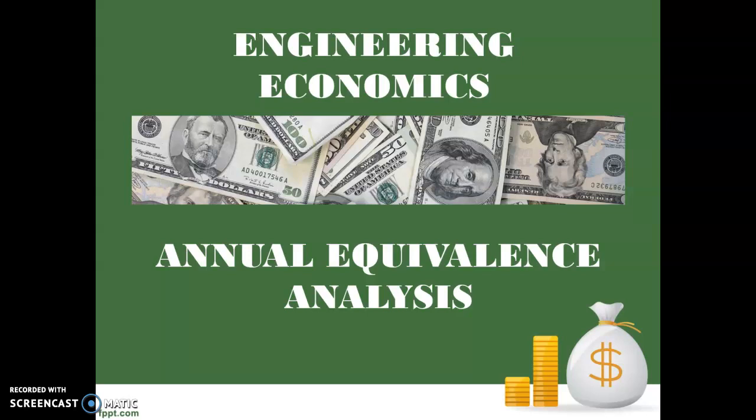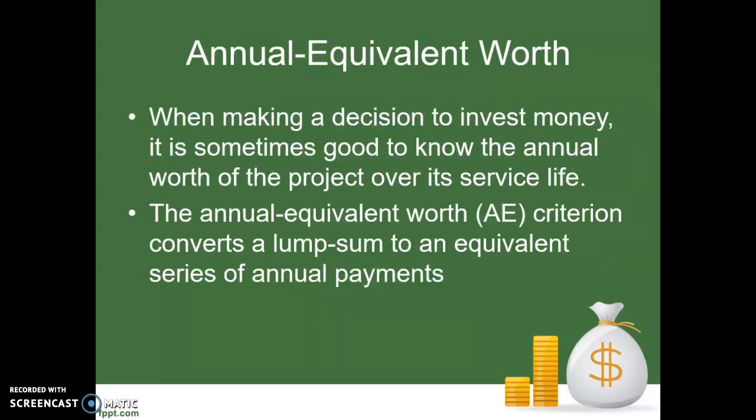Welcome to an engineering economics video. We are looking at chapter six in the textbook, and the topic we're going to cover in this chapter is annual equivalence analysis. We have already looked at a few ways of screening projects. If you're an engineer and head of an engineering department at a company and you need to decide what projects your department is going to do to make the company more profitable, and you have several different options, you need some systematic way of evaluating them to decide which projects would be a good idea to do and which ones you might want to take a pass on.